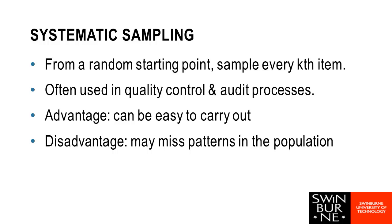The fourth method is systematic sampling. We normally have a list of the population or data we're sampling from, find a random starting point, and from there take every kth item — whether every tenth, twentieth, fiftieth, or hundredth — sampling at an equal spaced interval. The random part is where we start; after that we count through the data in even amounts. For some business applications, particularly quality control and auditing, this can be a much easier way to carry out sampling and gives a good spread across the sample.